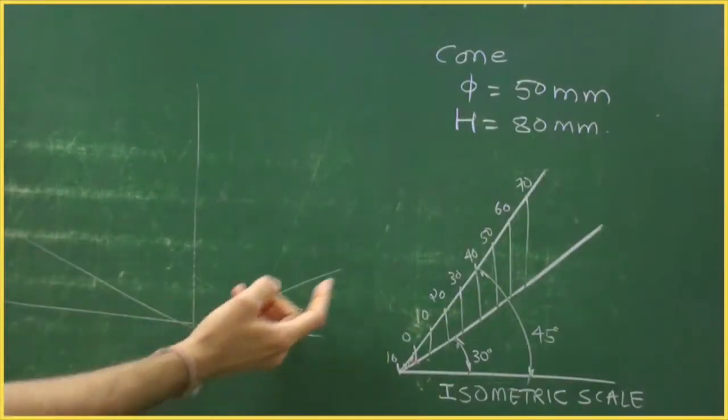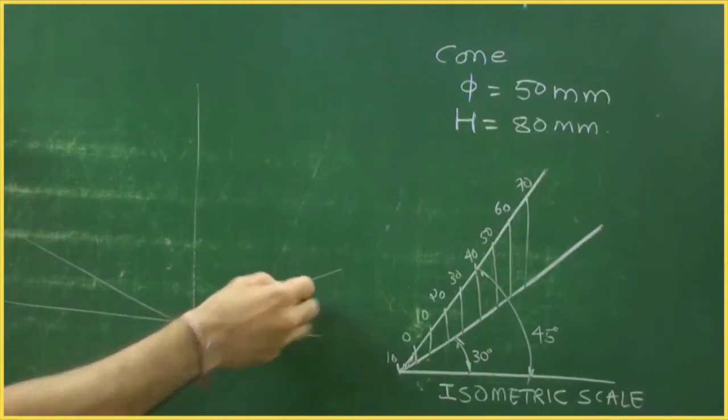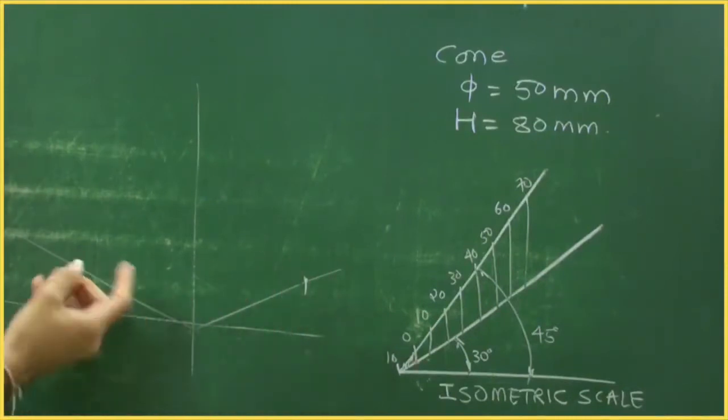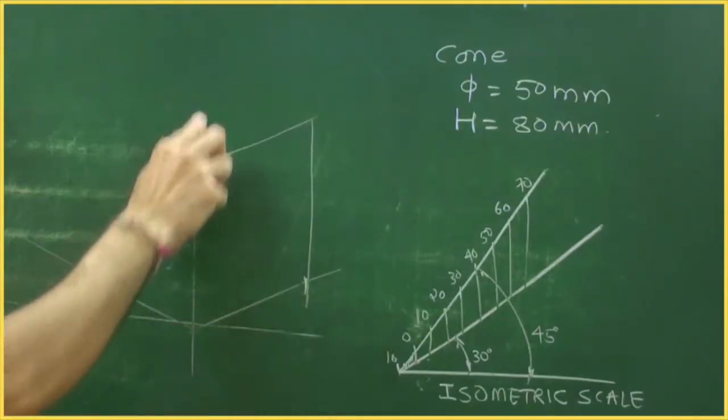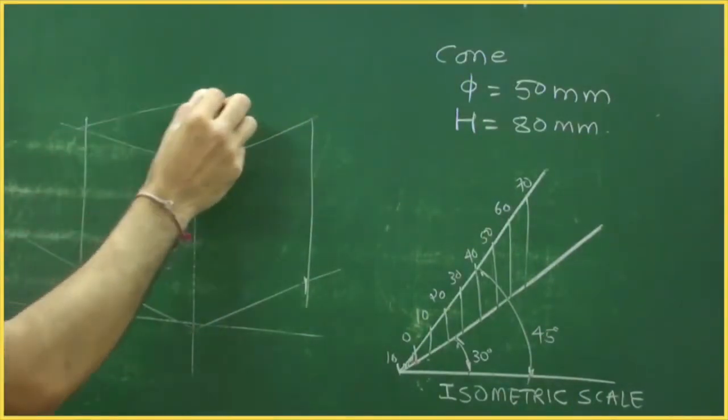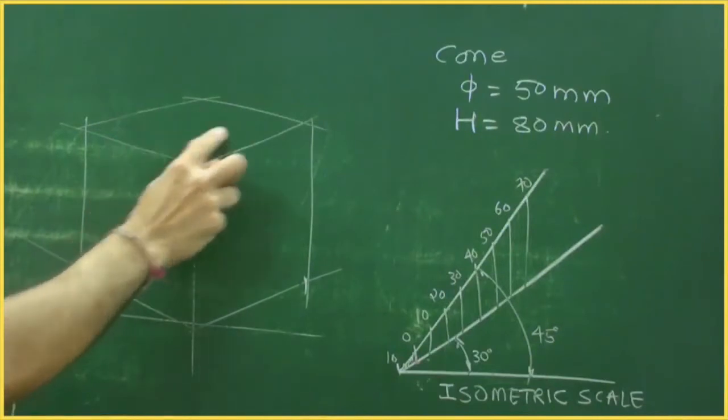In this case we have to draw inverted. So we will take 50, 50 on both the sides, height 80. Now it is upside down, so circle will come up.